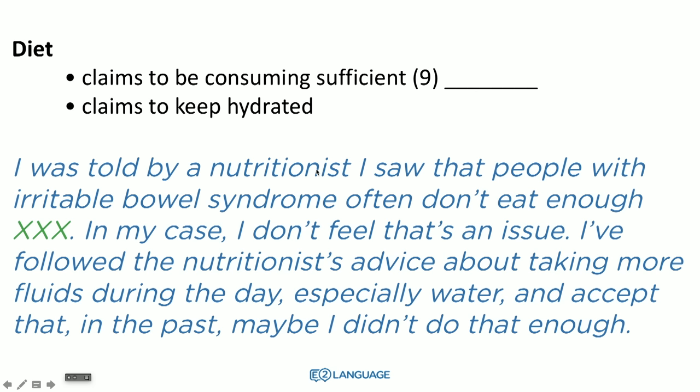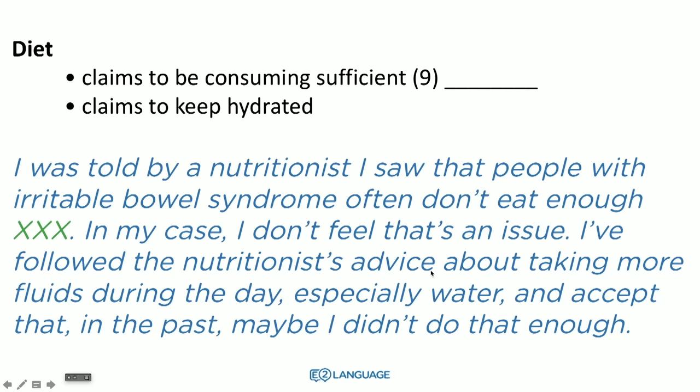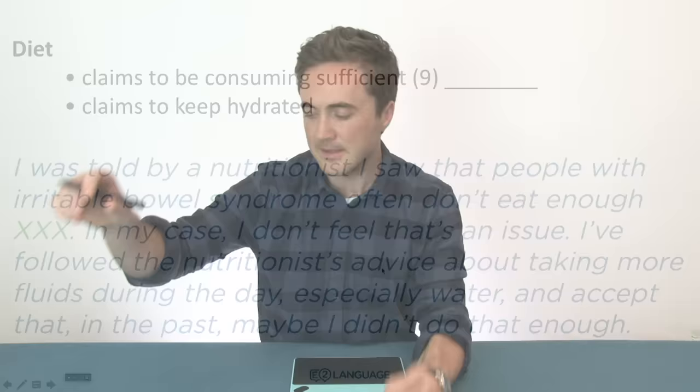The signpost is 'diet — claims to be consuming sufficient.' We know this is a type of food. 'Claims to be hydrated — I was told by a nutritionist I saw that people with irritable bowel syndrome often don't eat enough. In my case, I don't feel that's an issue.' Claims — sufficient — 'I don't feel that's an issue' — that's his claim. 'I followed the nutritionist's advice about taking more fluids during the day.' You were talking about hydration. That shows you the relationship between what the speakers say and the words on the page — they're different, they're synonymous.